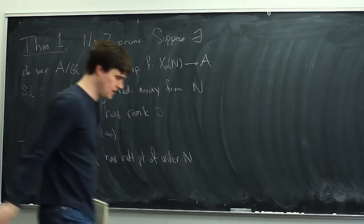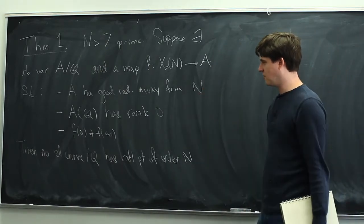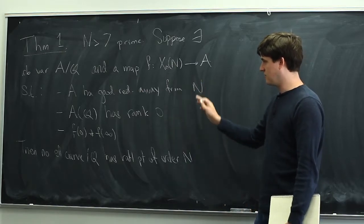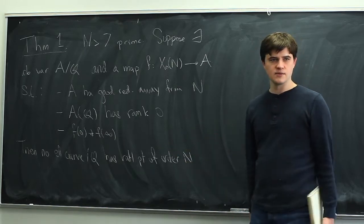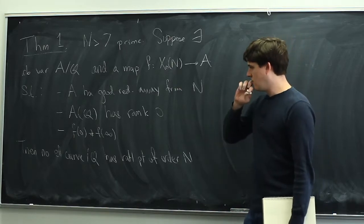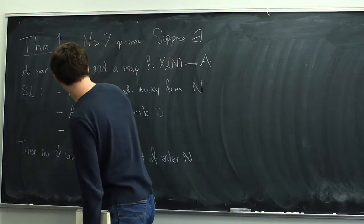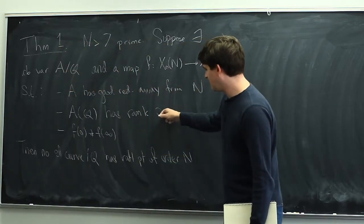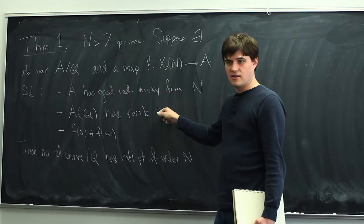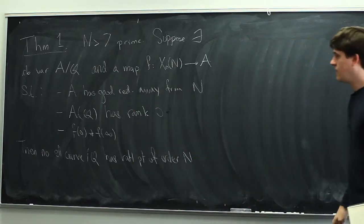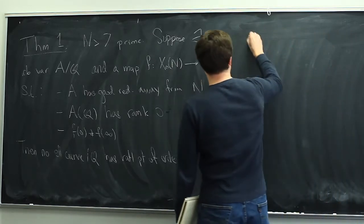Following this lecture, what we're going to try to do is verify the hypotheses of this theorem — construct an A and an f so that we can prove Mazur's theorem that curves don't have n-torsion if n is a prime bigger than 7. The hardest hypothesis to verify is good reduction. We had another theorem, called Theorem B in the first lecture, that told us how we could guarantee that. Combining the two theorems — the criterion for rank 0 and this one — gives the following theorem.